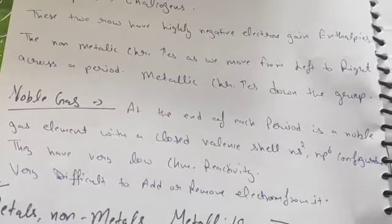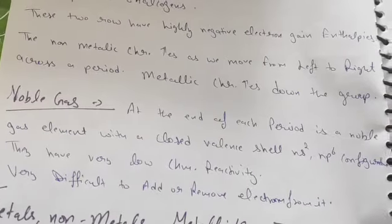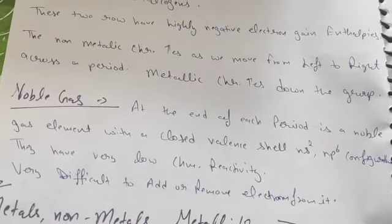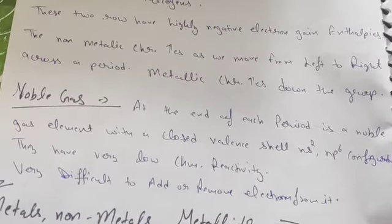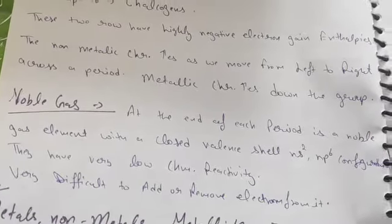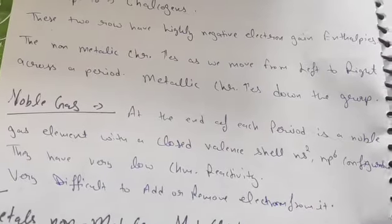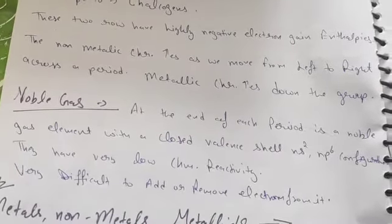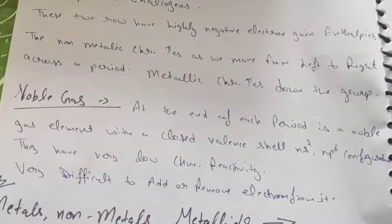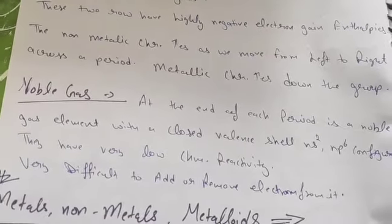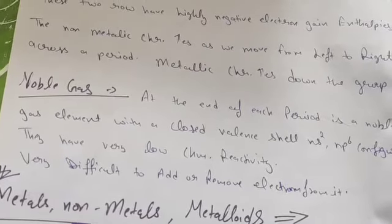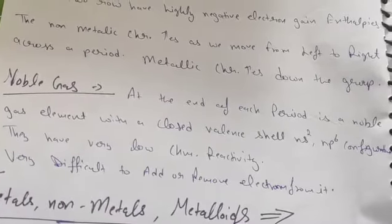At the end of each period is a noble gas element with a closed valence shell, that is ns2 np6 configuration. Every period's last element is a noble gas, and its electronic configuration is fulfilled like ns2 full and np6 full, where n is the period number.